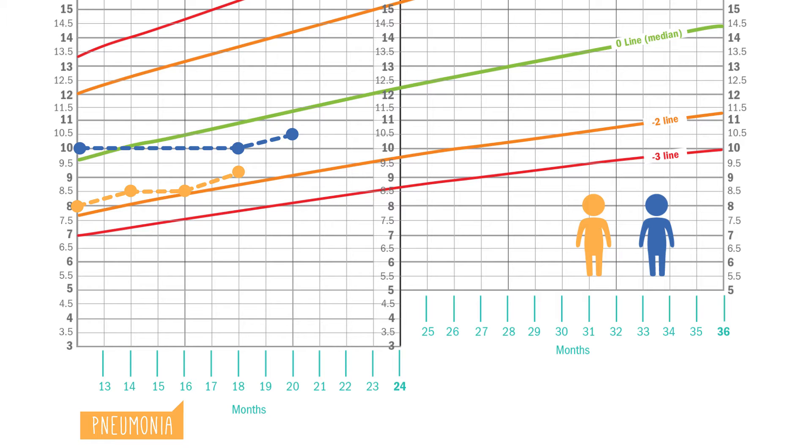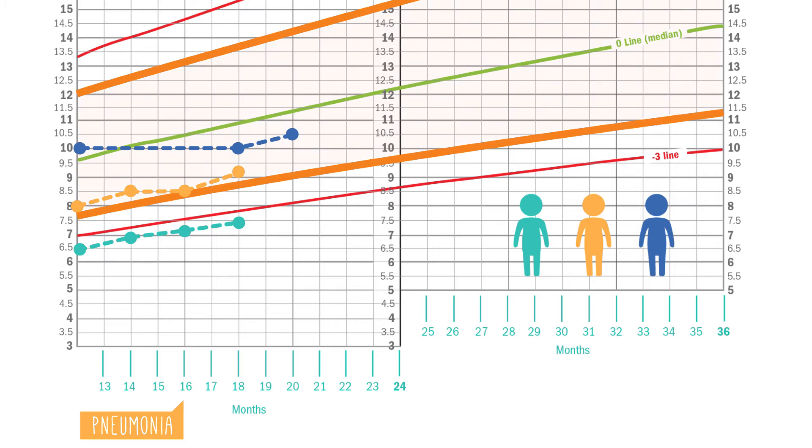Having said that, a steady curve doesn't always mean that a child is healthy. So a child who is tracking steadily but is on or below the red line is very likely to be in trouble. Remember that we like to see children fall somewhere between these two orange lines.